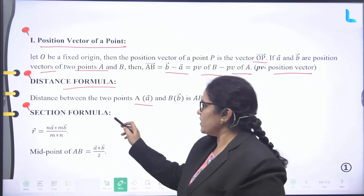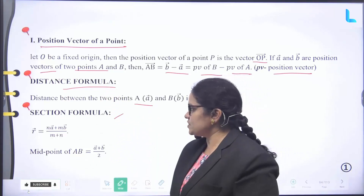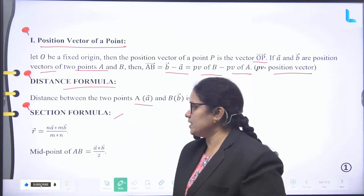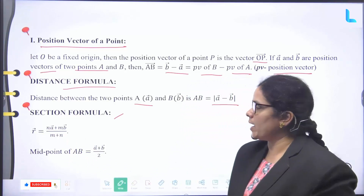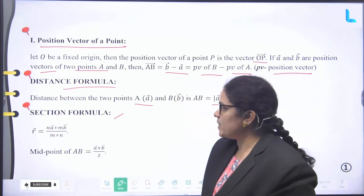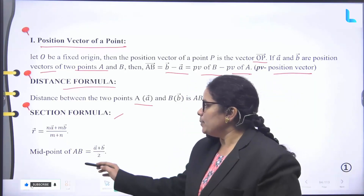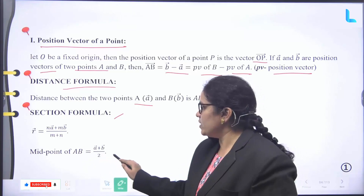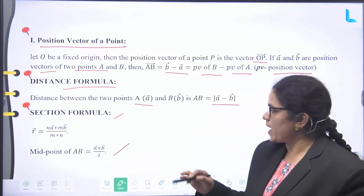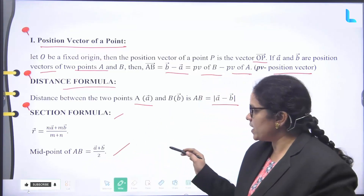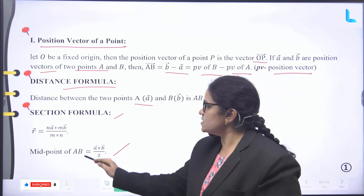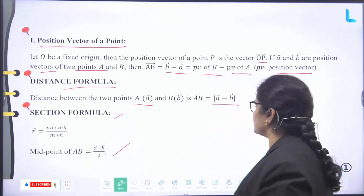Section formula. R arrow equals (N times A arrow plus M times B arrow) divided by (M plus N). The midpoint of AB formula is (A arrow plus B arrow) divided by 2. These are the section formulas.